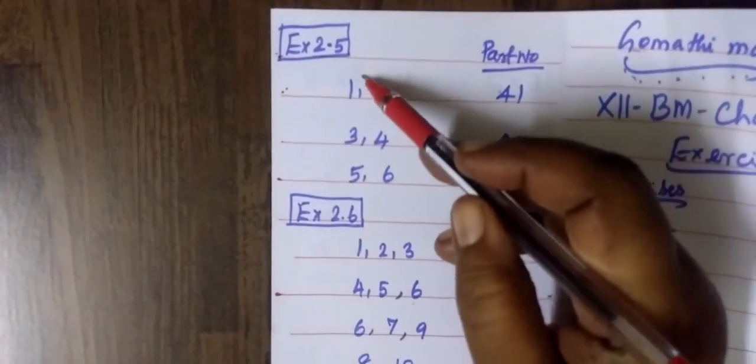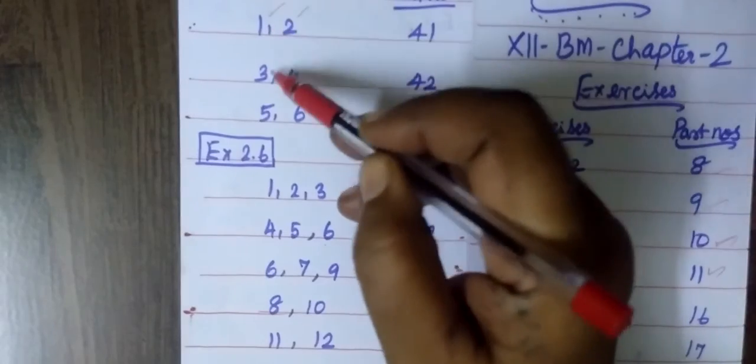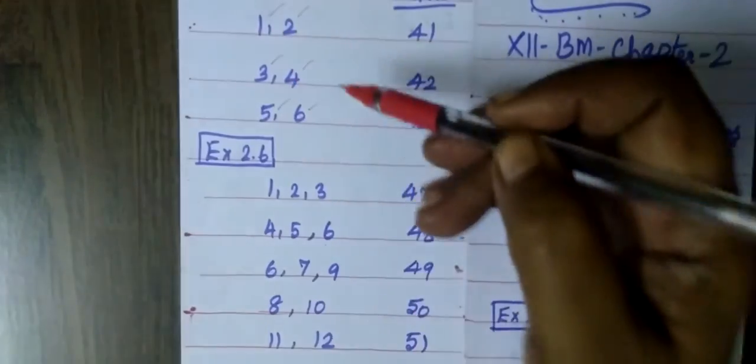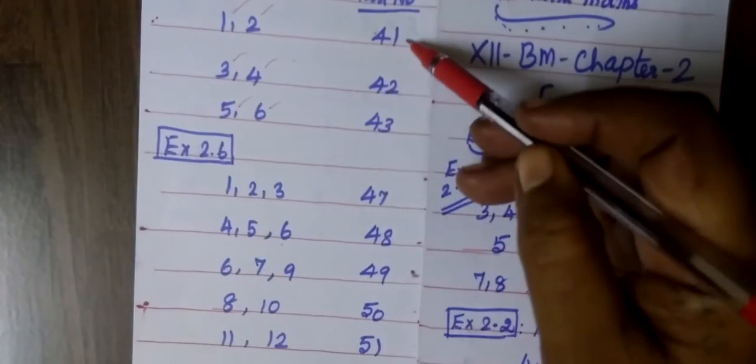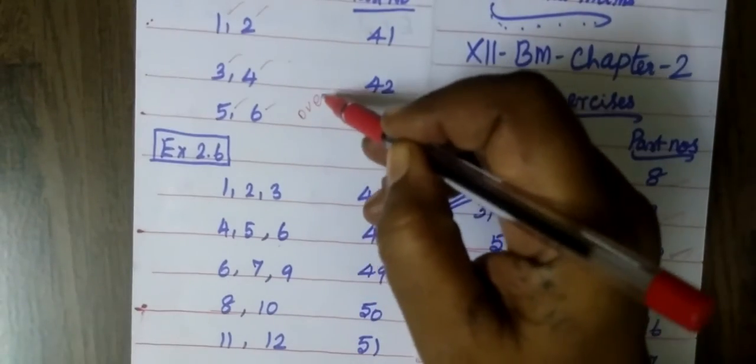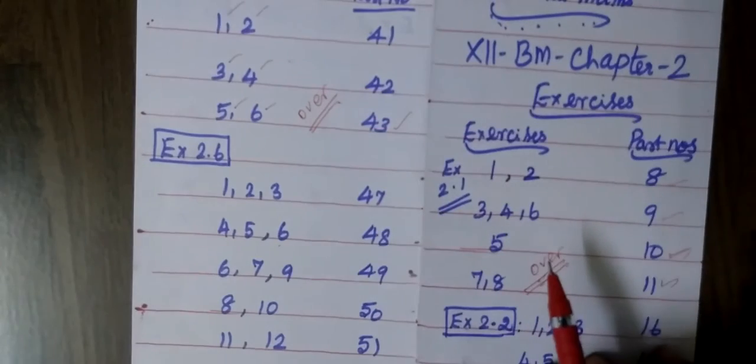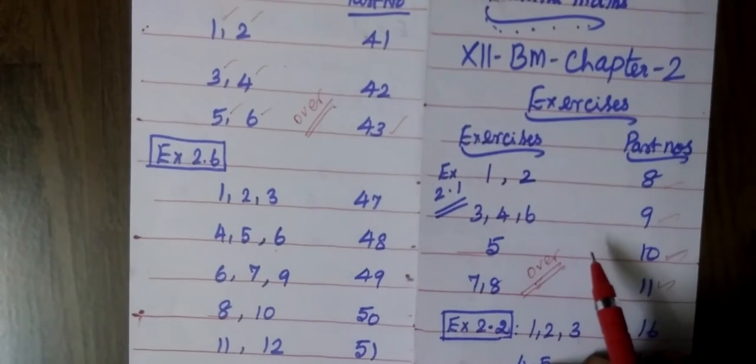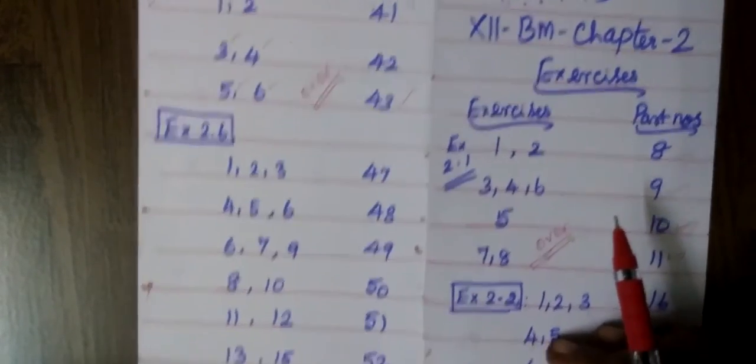Now coming to Exercise 2.5. Let's see question number 1, 2, 3, 4, 5 and 6. So all this you can see in part number 41, 42 and 43. So Exercise 2.5 is over.